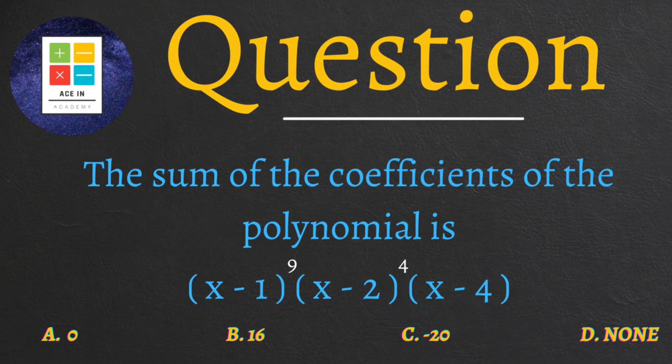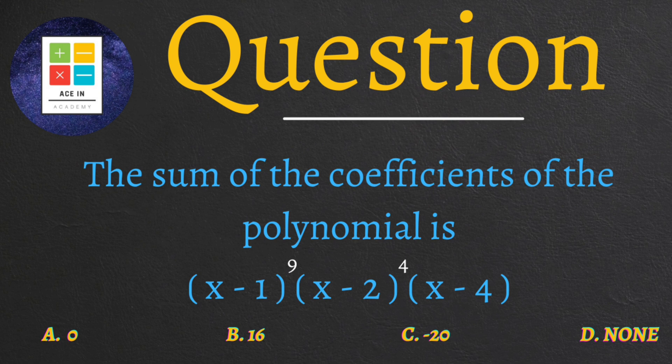Now the question is as follows: the sum of the coefficients of the polynomial (x minus 1) raised power 9 into (x minus 2) raised power 4 into (x minus 4) is. We are provided with four options: A) 0, B) 16, C) minus 20, and D) none of these.